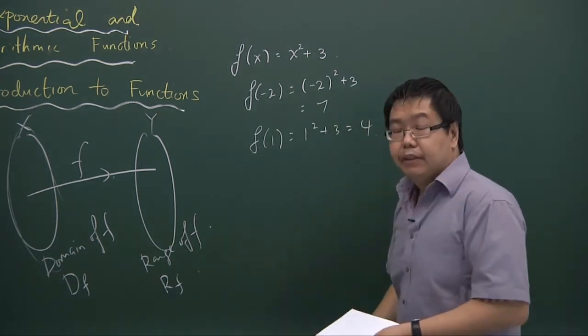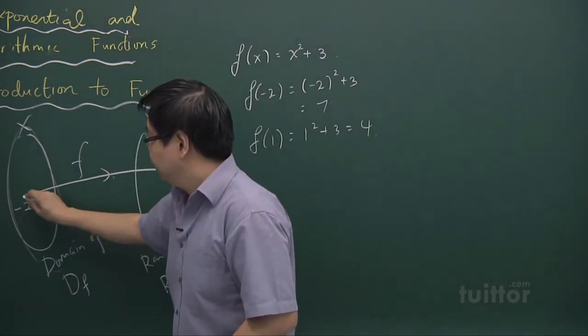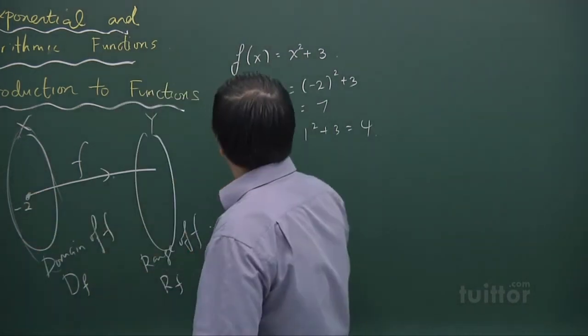And you sub in 1 inside, you get 1 squared plus 3, that gives you 4. So diagrammatically it means that it maps the value minus 2 to the value 7 and it maps 1 to 4.